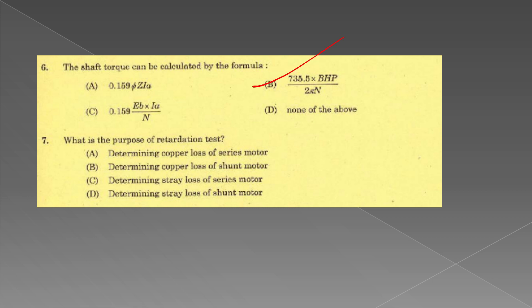Purpose of retardation test: determining copper loss of shunt motor, determining stray loss of DC motor. Option D - determining stray loss of DC motor.